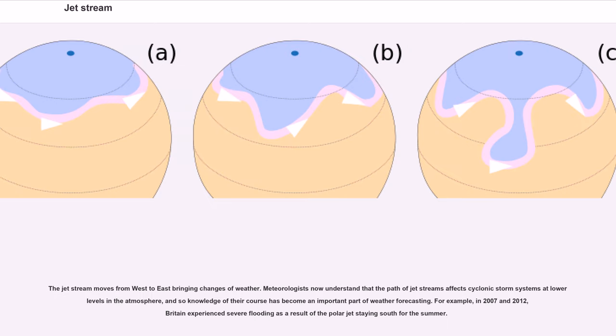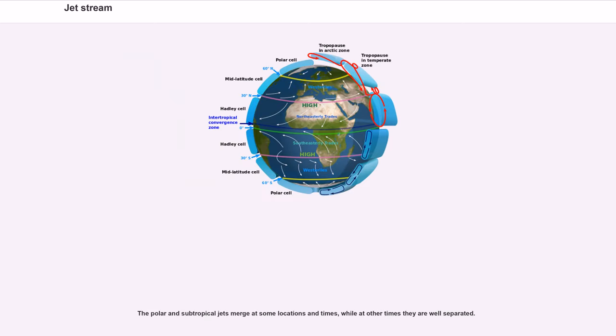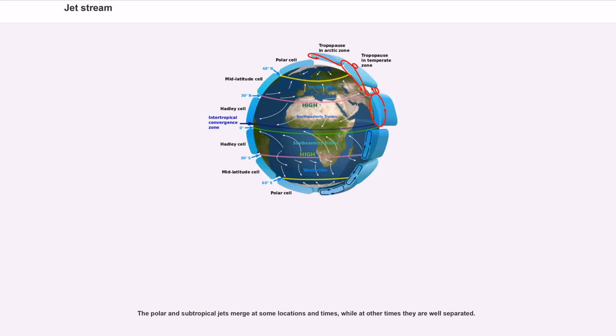The jet stream moves from west to east bringing changes of weather. Meteorologists now understand that the path of jet streams affects cyclonic storm systems at lower levels in the atmosphere, and so knowledge of their course has become an important part of weather forecasting. For example, in 2007 and 2012, Britain experienced severe flooding as a result of the polar jet staying south for the summer. In general, winds are strongest immediately under the tropopause, except locally, during tornadoes, tropical cyclones or other anomalous situations.